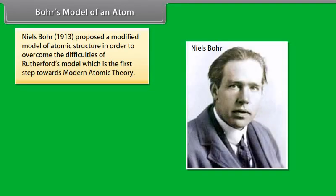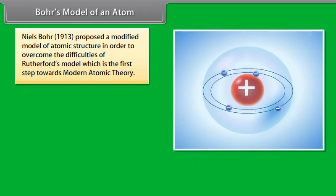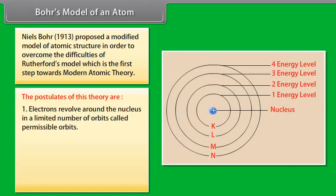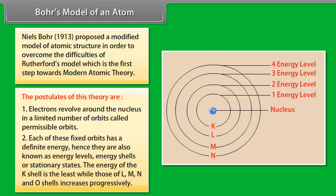Bohr's Model of an Atom. Niels Bohr, 1913, proposed a modified model of atomic structure in order to overcome the difficulties of Rutherford's model which is the first step towards modern atomic theory. The postulates of this theory are: Electrons revolve around the nucleus in a limited number of orbits called permissible orbits. Each of these fixed orbits has a definite energy, hence they are also known as energy levels, energy shells or stationary states. The energy of the K shell is the least, while those of L, M, N and O shells increases progressively.